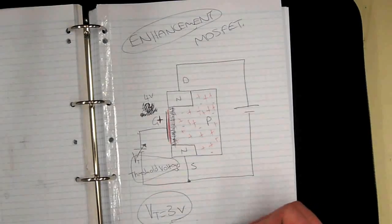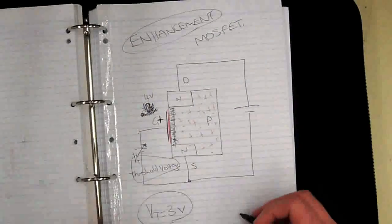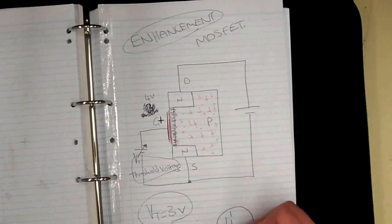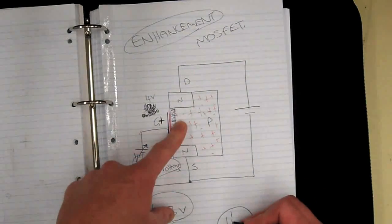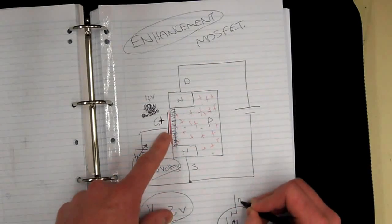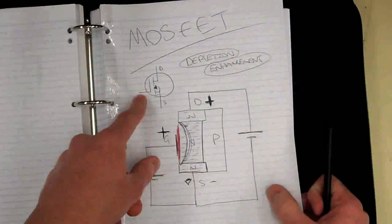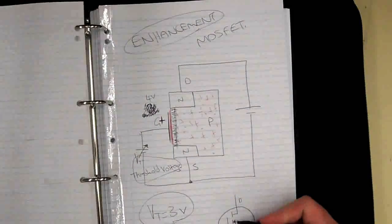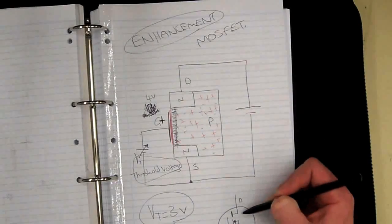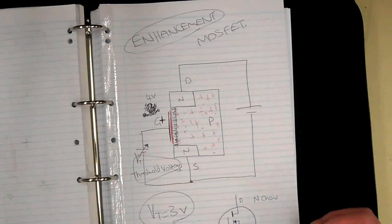The circuit symbol for the Enhancement MOSFET is very similar to the Depletion Enhancement version — we have the gate coming in — but because there's no physical channel, we represent it with a broken channel line. You still have your gate, drain, and source with the arrow, but the channel is broken to indicate there's no physical channel present. That's the circuit symbol for an N-channel Enhancement MOSFET.